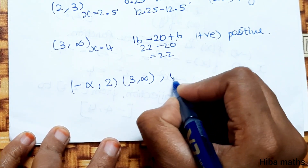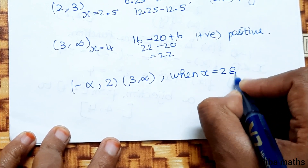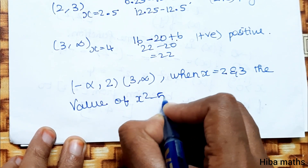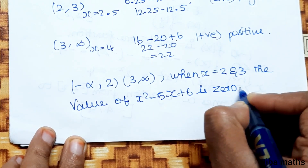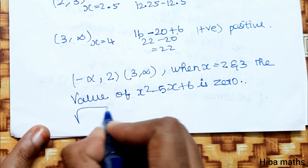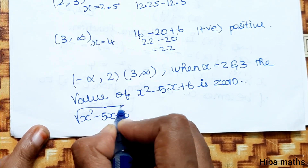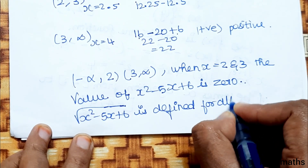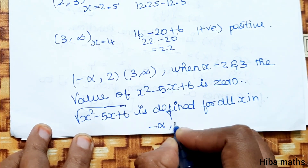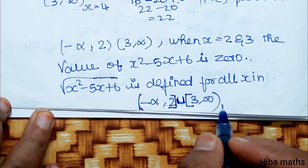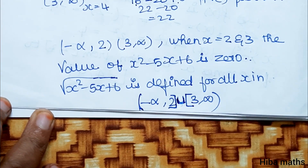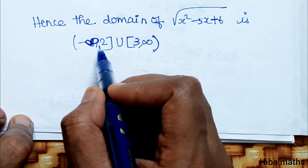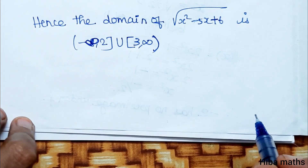Therefore, when x equals 2 and 3, the value of the polynomial x squared minus 5x plus 6 is zero, so the root is defined. The function root of x squared minus 5x plus 6 is defined for all x in minus infinity to 2 union 3 to infinity. Hence the domain of root of x squared minus 5x plus 6 is minus infinity comma 2 union 3 comma infinity. Thank you so much for watching.